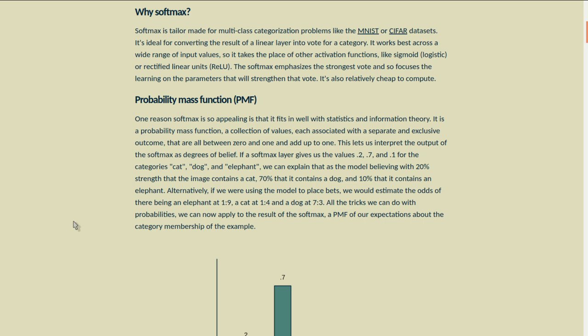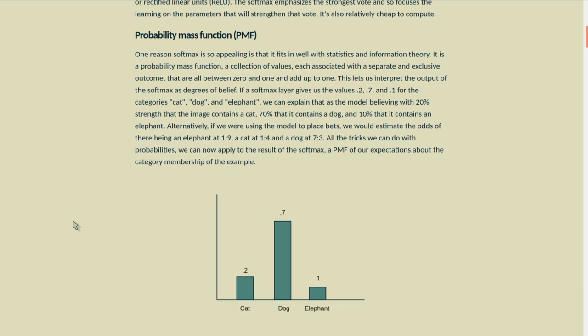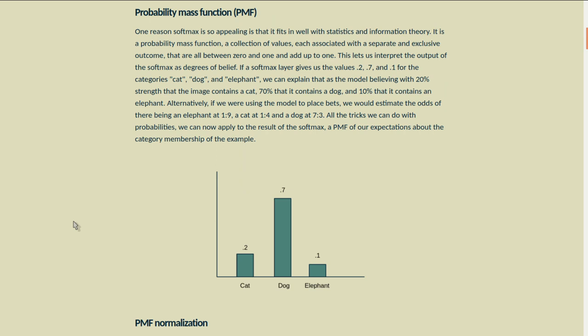One reason the Softmax is so appealing is that it fits in well with statistics and information theory. It's a probability mass function, so it's a collection of values, each associated with a separate and exclusive outcome, that are all between 0 and 1. And if you add them all up, you get 1.